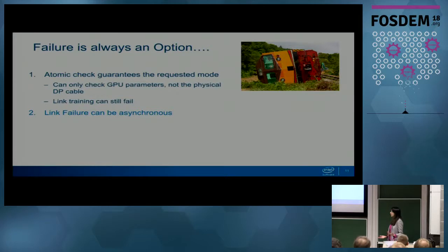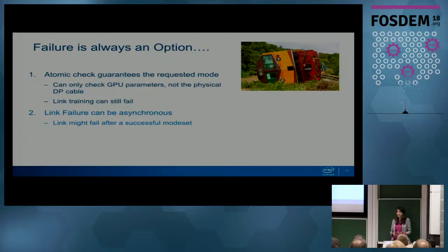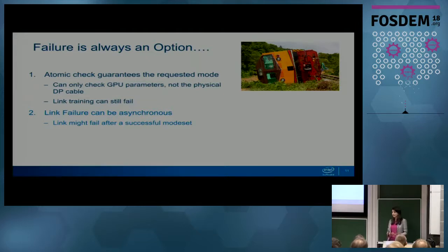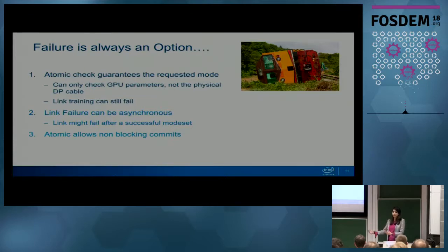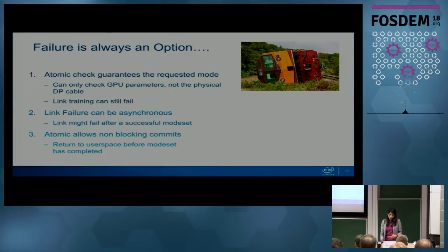This link training failure is asynchronous - the link might be working, transmitting symbols, but can fail at some point while up and running and displaying something. So we need a way to asynchronously send a notification to user space any time it detects the link is not working correctly. Also, atomic allows non-blocking commits - it does the mode set and returns control to user space before the atomic commit completes, so user space still doesn't know if it successfully displayed something. We need some way to asynchronously notify this to user space.